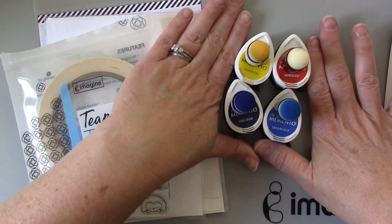I'm choosing colors to make a Tuscan sky today using memento dye ink and these little sponge daubers. Now the colors of ink that I chose are dandelion, morocco, danube blue, and paris dusk.